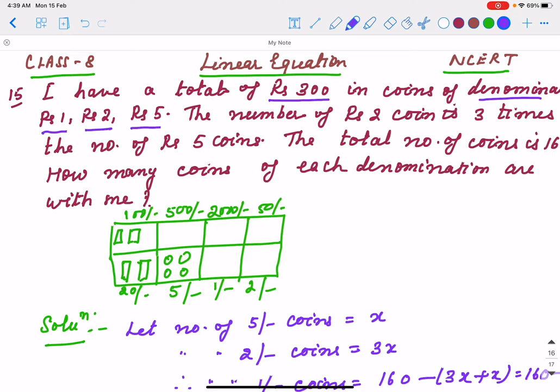There is a relation between the coins. The number of 2 rupee coins is 3 times the number of 5 rupee coins. If there is 1 five-rupee coin, that means 2 rupee coins are 3. If there are 2 five-rupee coins, 2 rupee coins are 6. So if there are x five-rupee coins,